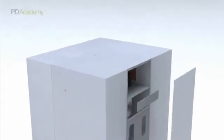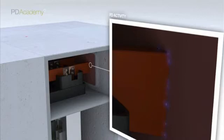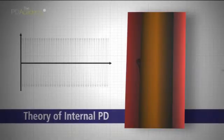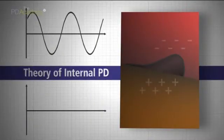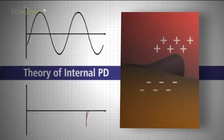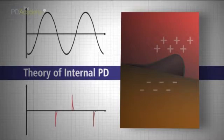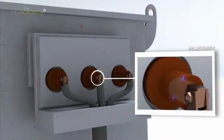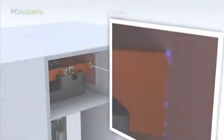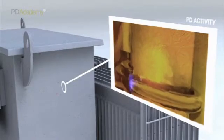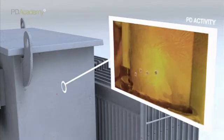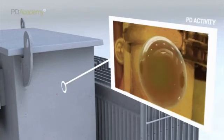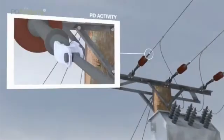A partial discharge is an electrical discharge or spark that bridges a small portion of the insulation between two conducting electrodes. PD activity can occur at any point in the insulation system where the electric field strength exceeds the breakdown strength of that portion of the insulating material. It can occur in voids within solid insulation, across the surface of insulating material, within gas bubbles in liquid insulation, or around an electrode in gas in the form of corona.